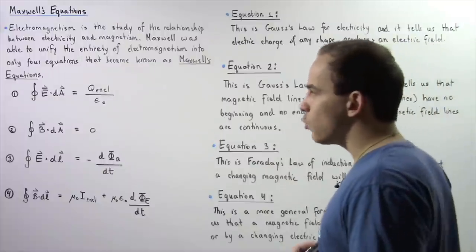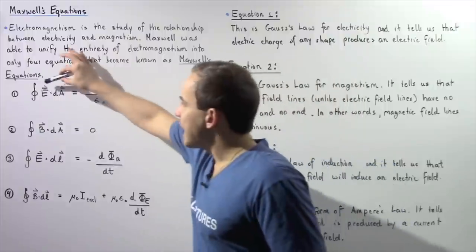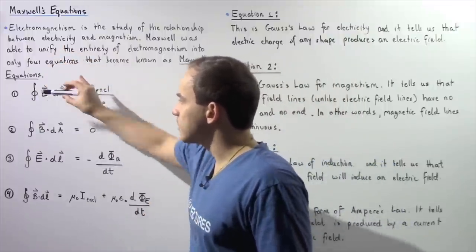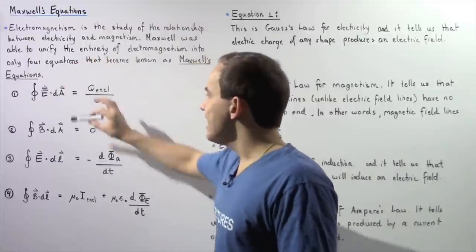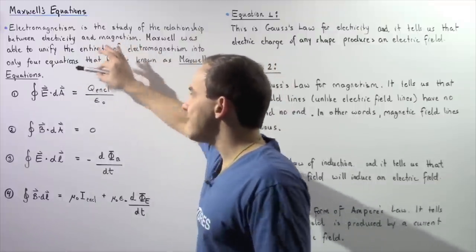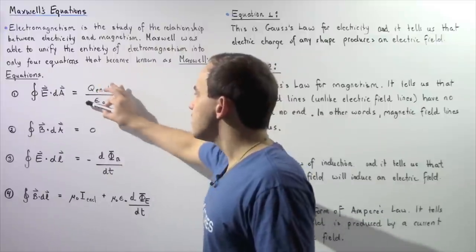Let's begin with equation one. Equation one tells us that the closed integral of the dot product of the electric field vector and our infinitely small area vector dA is equal to the total charge enclosed in our chosen surface divided by the constant